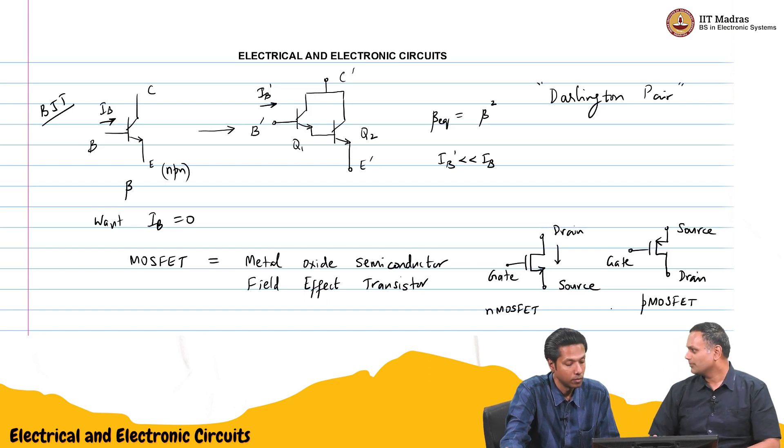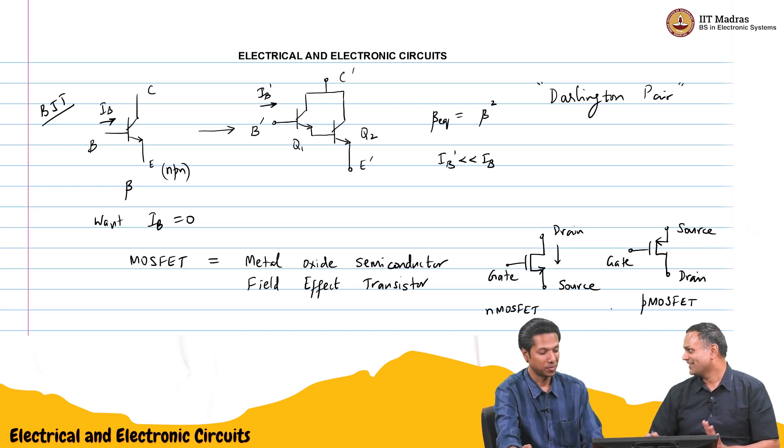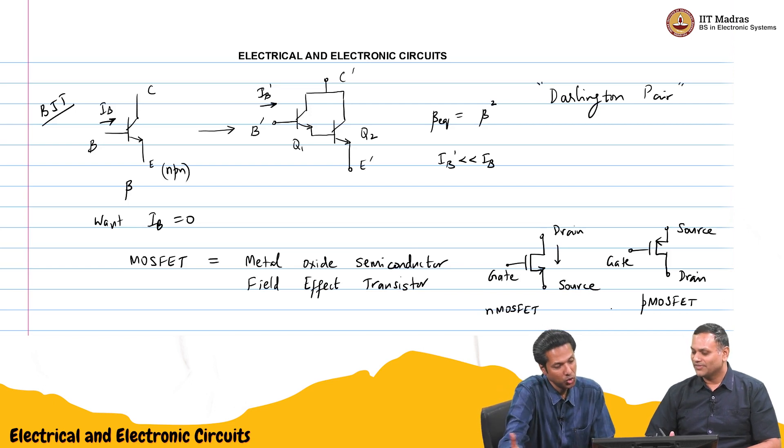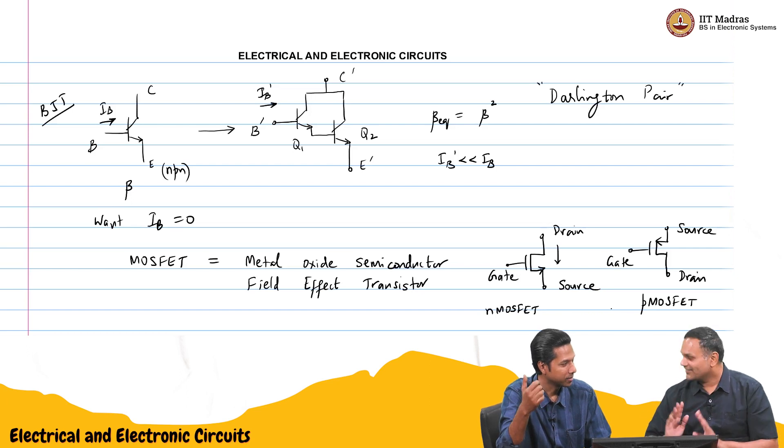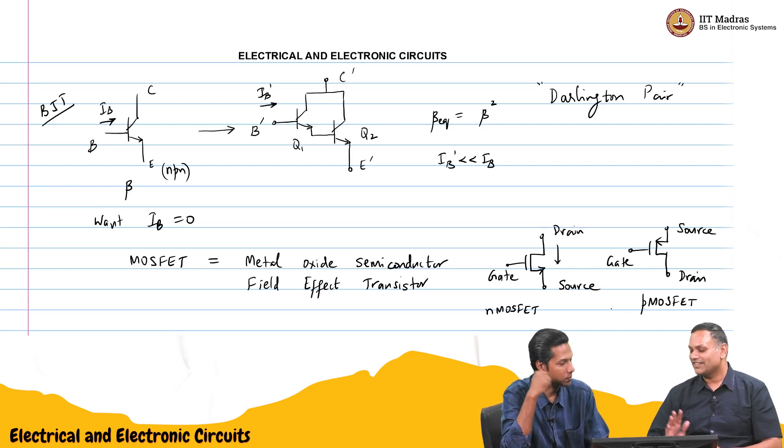And like you pointed out, people do not want to say N MOSFET. They just say N MOS and PMOS. Easy. And we will also most likely do that. Because it is understood. It is understood. Right. So field effect transistor. So field is, electric field is doing something. Correct. That is right. Okay. We will see that later.